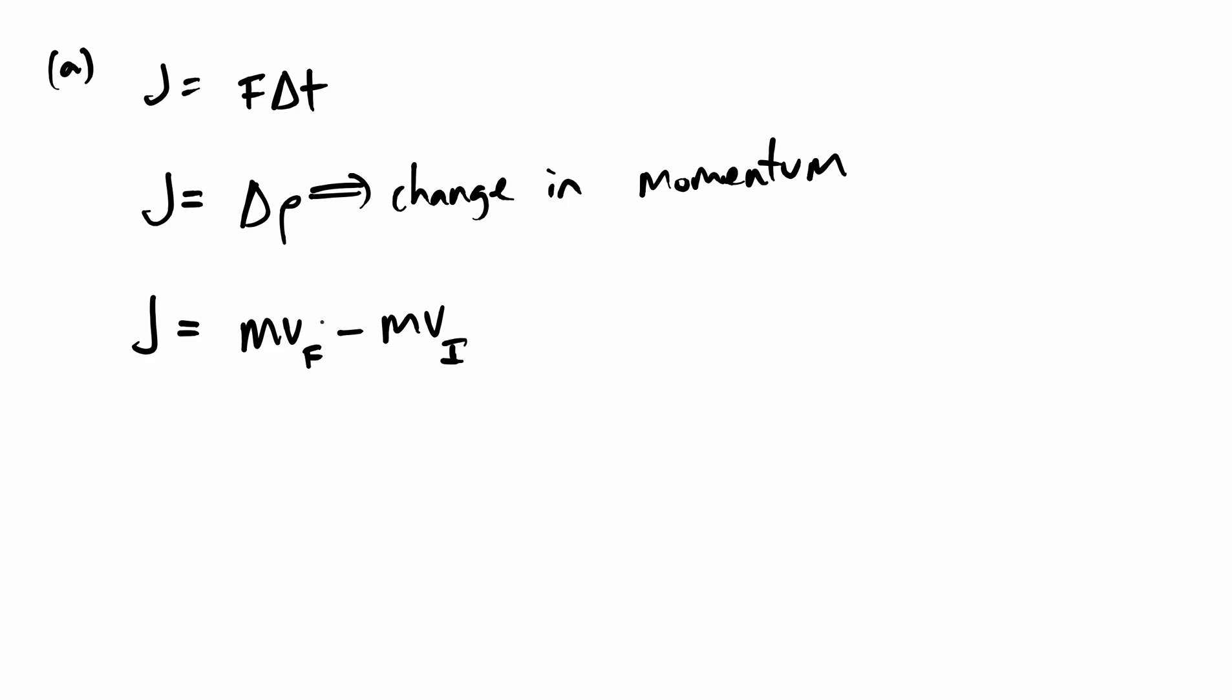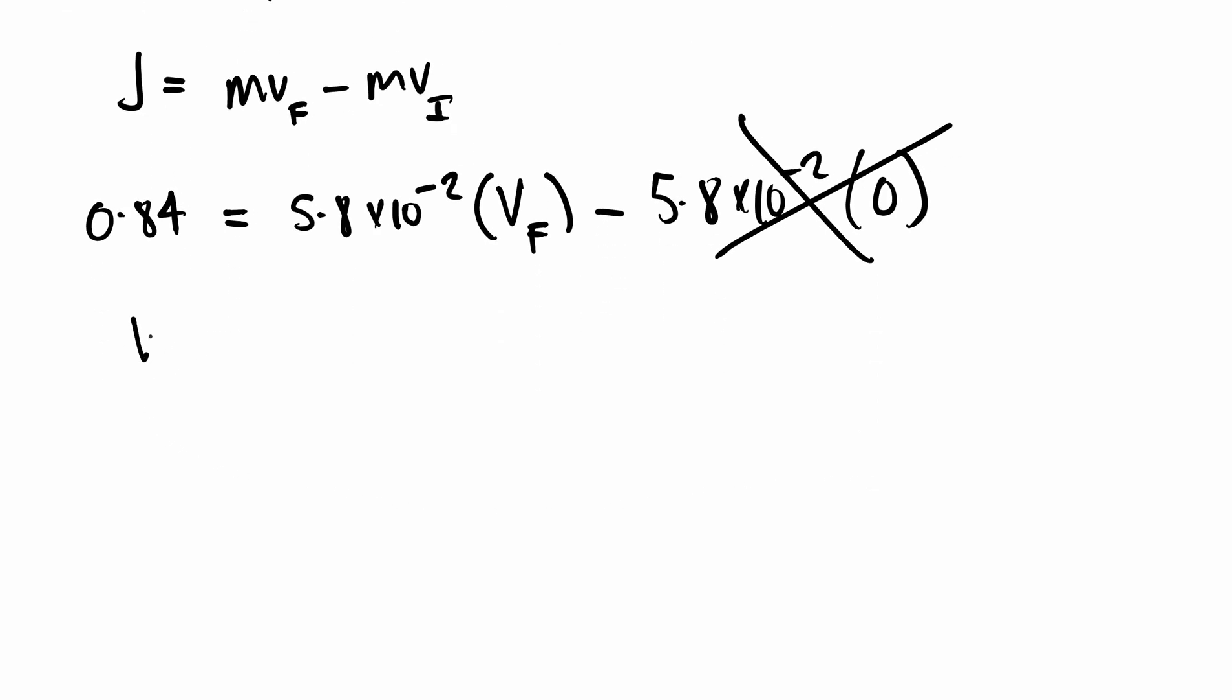Can we use this to find velocity? We know J, which is 0.84, is equal to the mass, 5.8 × 10⁻² times the velocity V final, which we need to find, minus the mass 5.8 × 10⁻² times the initial velocity. The tennis ball starts at rest, so that's zero. That whole thing gets rid of because it's just zero. By rearranging, V final is equal to 0.84 divided by 5.8 × 10⁻². I get the speed of the ball is 14.5 meters per second. That's your answer for part A.